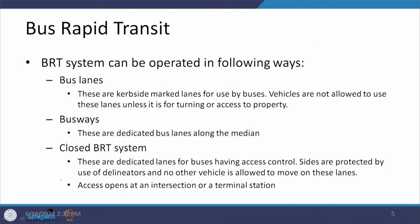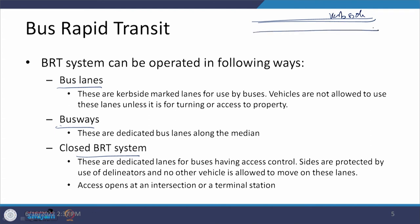When we operate bus transportation as a BRT, there are various ways in which it can be done. They can be in terms of a bus lane, busways, a closed BRT system, or a hybrid BRT system. In the case of a bus lane, one lane on the curbside is dedicated as a bus lane, and the rest of the lanes are utilized for other motorized vehicles.